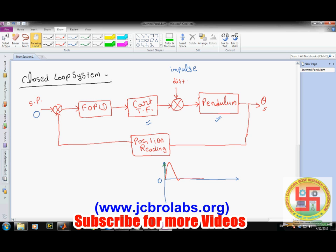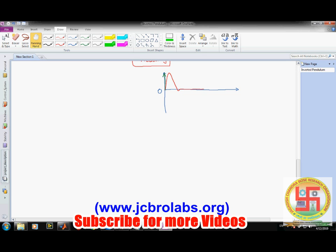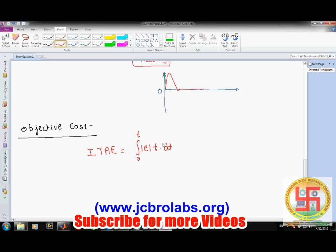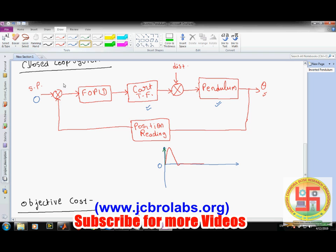Coming to the optimization part, one of the critical things is the objective function - what objective function you are using or the cost function which you are trying to minimize through any optimization algorithm. In this case, we have used the ITAE cost function, which is simply the integral of absolute value of error into time into dt. From here we have calculated the error.